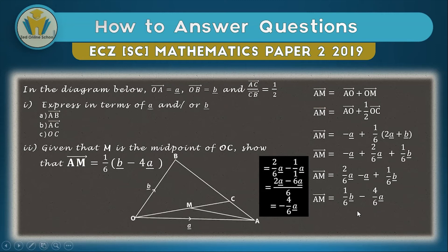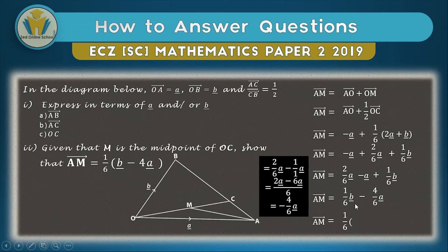After arranging the positive term first, we factorize. The common denominator is six, and the common factor in numerators 1 and 4 is one, so one-sixth comes outside the brackets. Inside the brackets we have b minus 4a, and expanding this should give back the earlier expression. We have thus shown that AM equals one-sixth (b minus 4a).